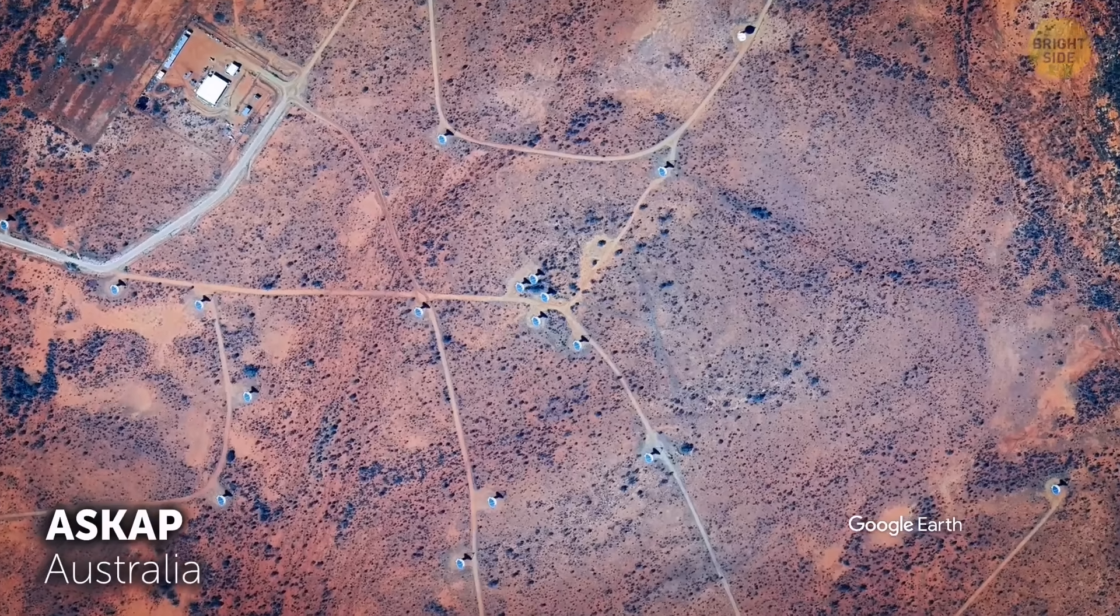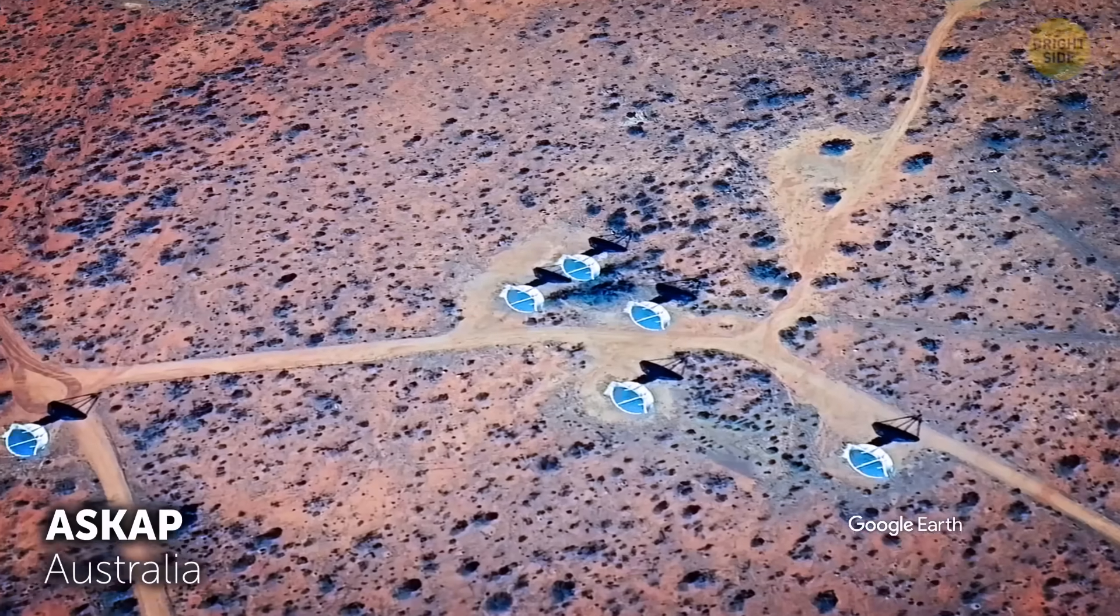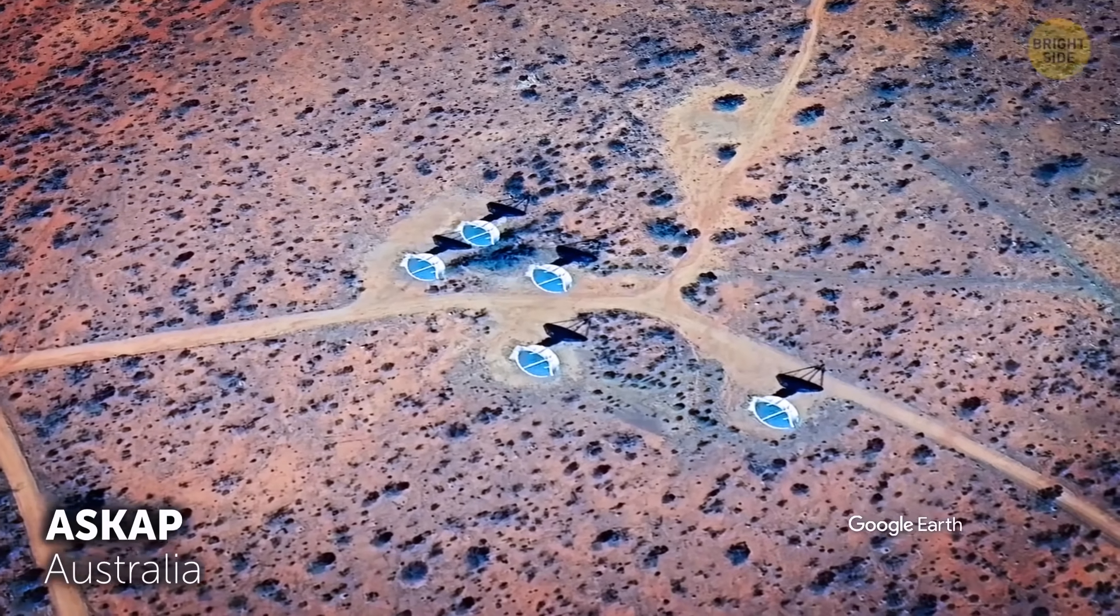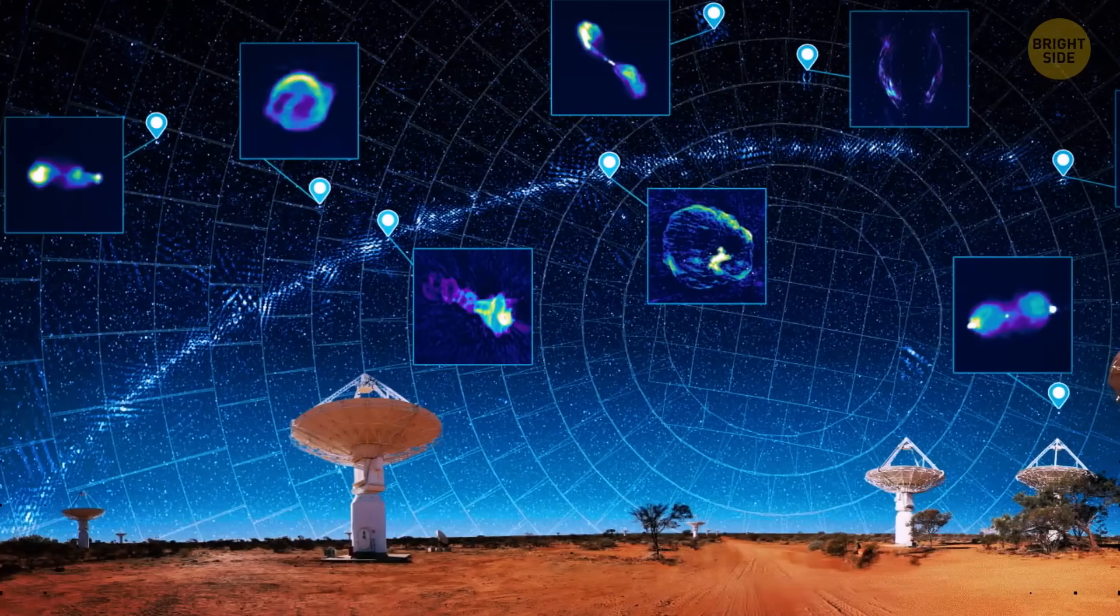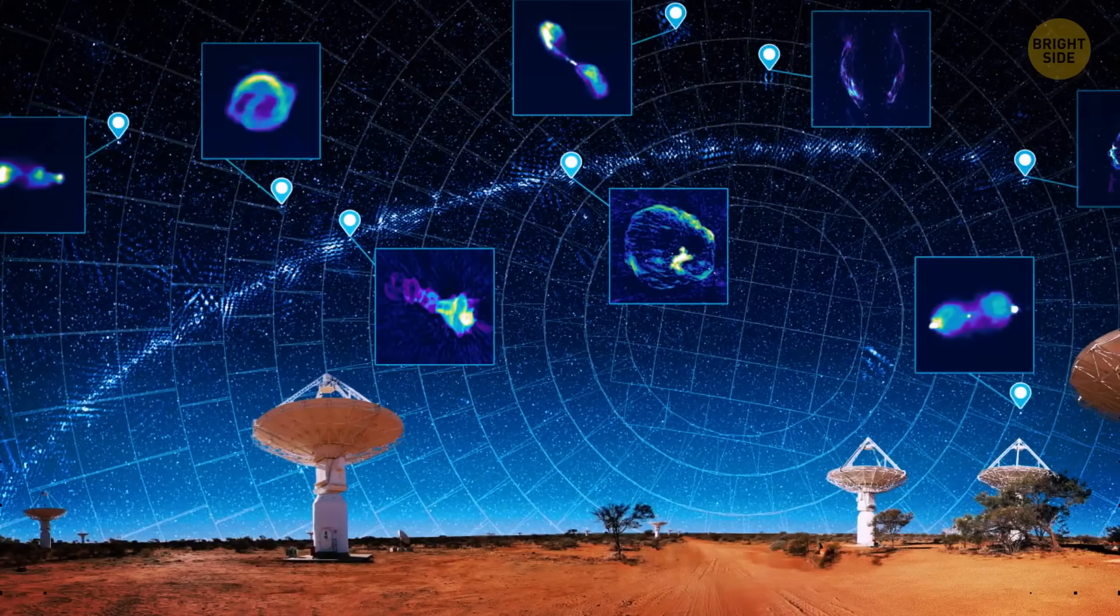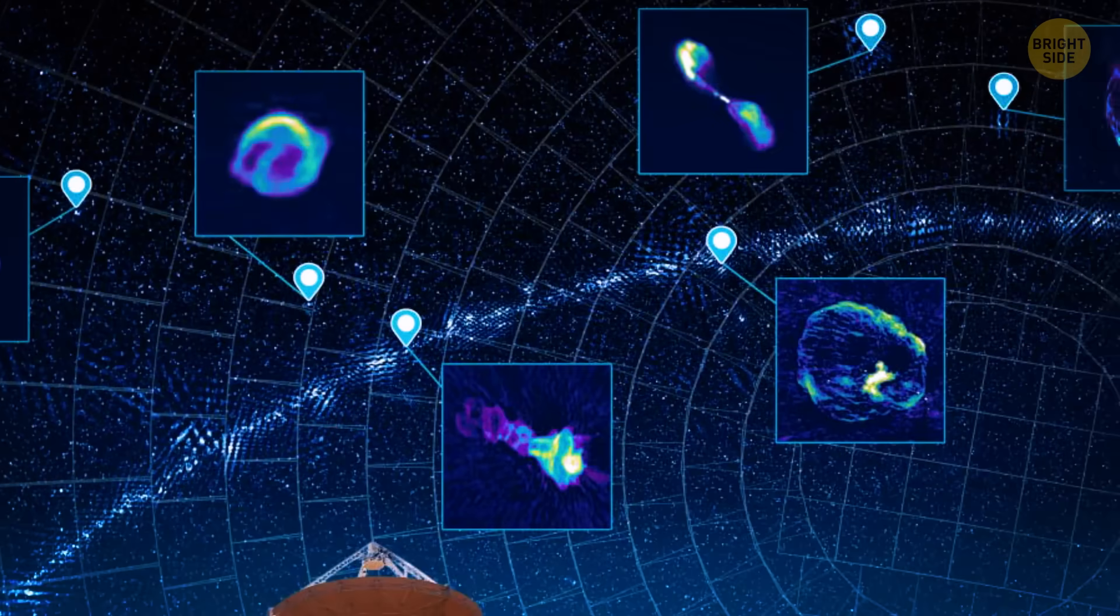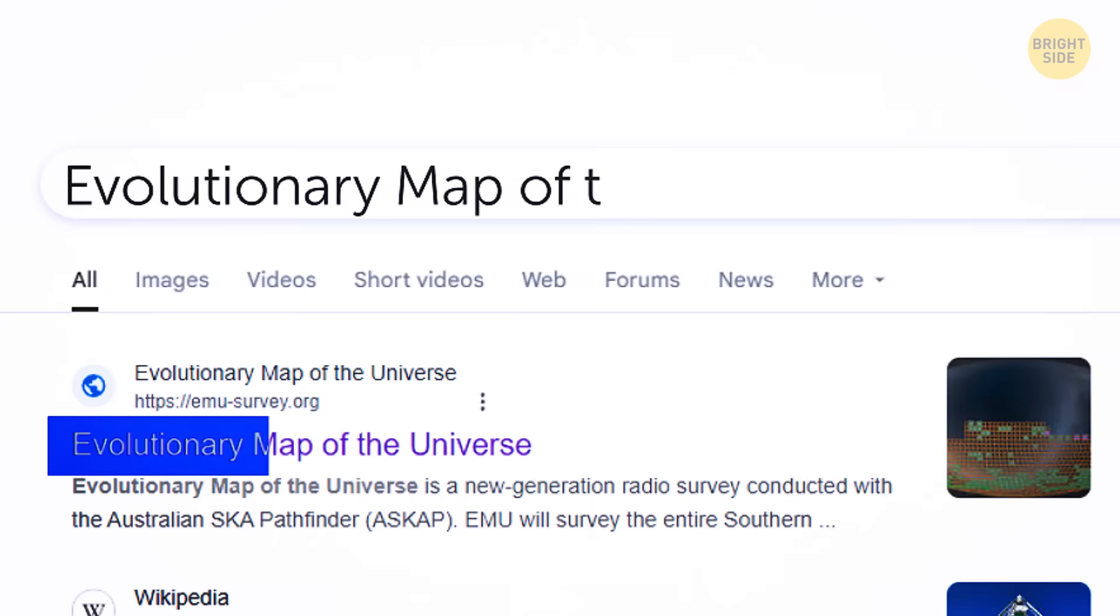This strange space body was discovered thanks to a telescope in Australia called ASCAP. It's been scanning the sky and finding all kinds of weird circular objects. This research was part of a project called the Evolutionary Map of the Universe.